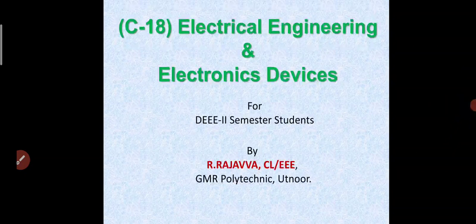Recap. In the previous class I explained some definitions: magnetizing force, reluctance, permeability, and absolute permeability.